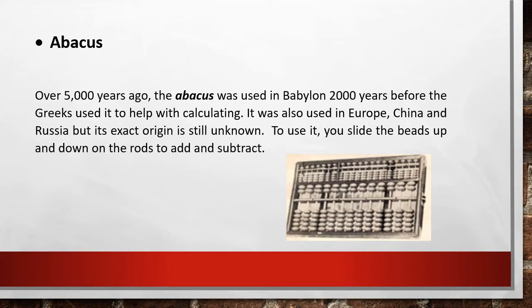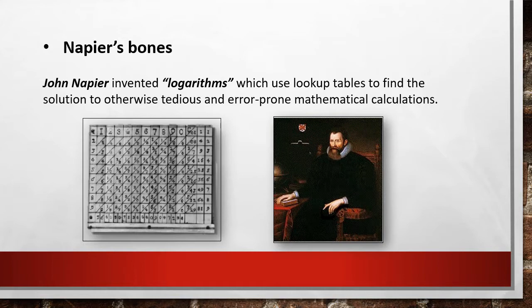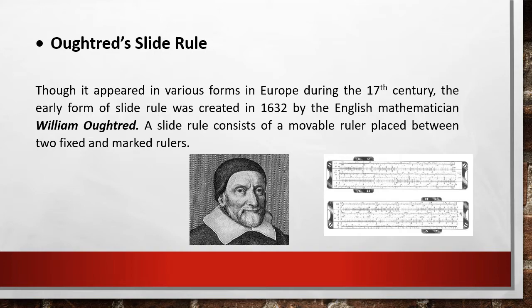Have you used the abacus before? Next, we have Napier's bones. John Napier invented logarithms, which use look-up tables to find the solution to otherwise tedious and error-prone mathematical calculations. Next, Oughtred's slide rule. Though it appeared in various forms in Europe during the 17th century, the early form of slide rule was created in 1632 by English mathematician William Oughtred. The slide rule consists of a movable ruler placed between two fixed and marked rulers.